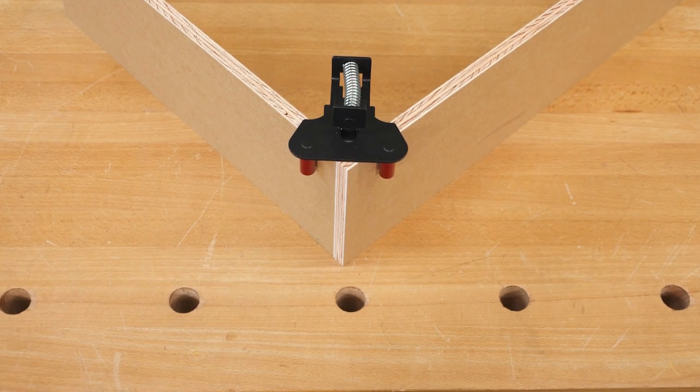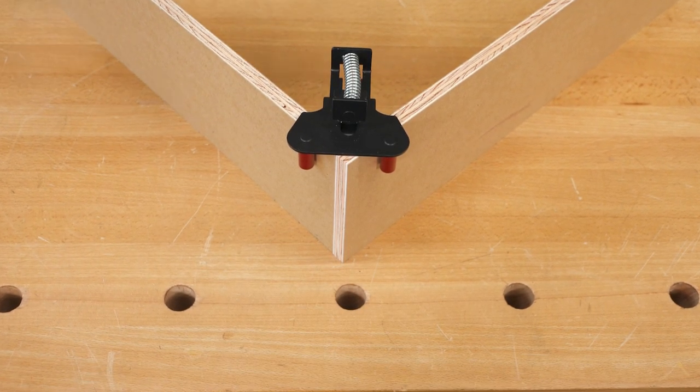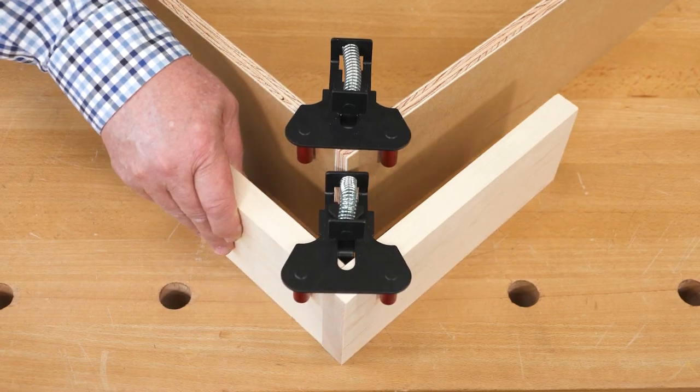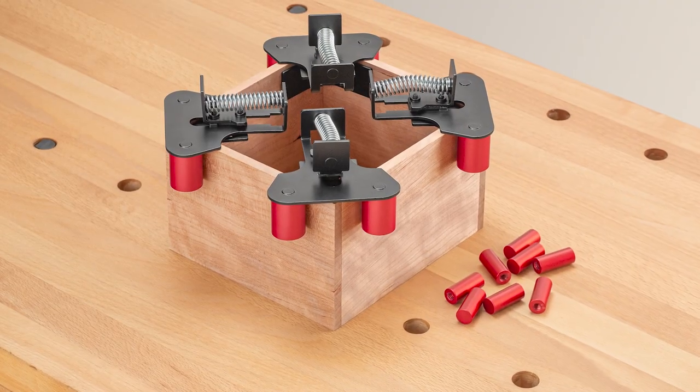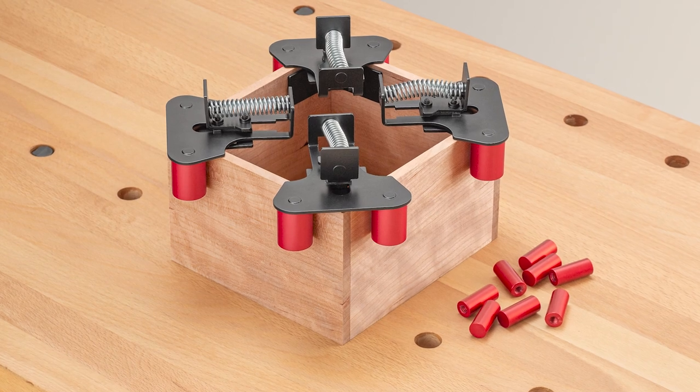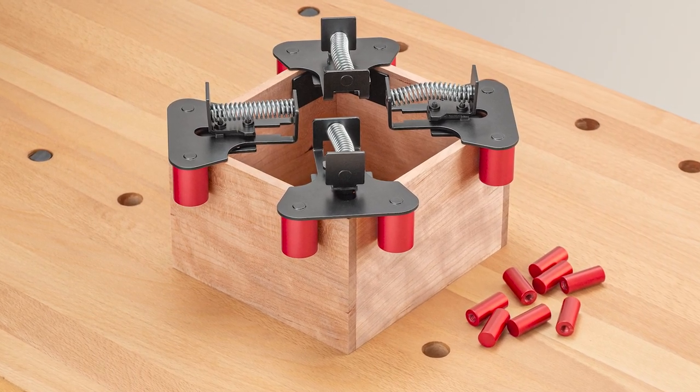The standard alignment pins can hold stock from one half inch to seven eighths inch. If you work with thinner material, there's an optional set of pins that works with material as thin as one quarter of an inch.